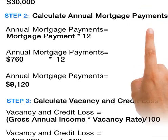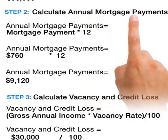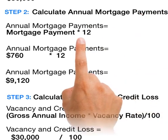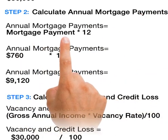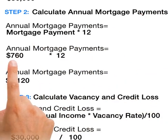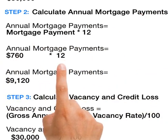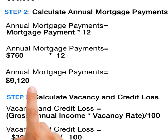Then we continue by calculating the annual mortgage payments, which is simply the monthly mortgage payments times 12. $760 times 12 equals $9,120.